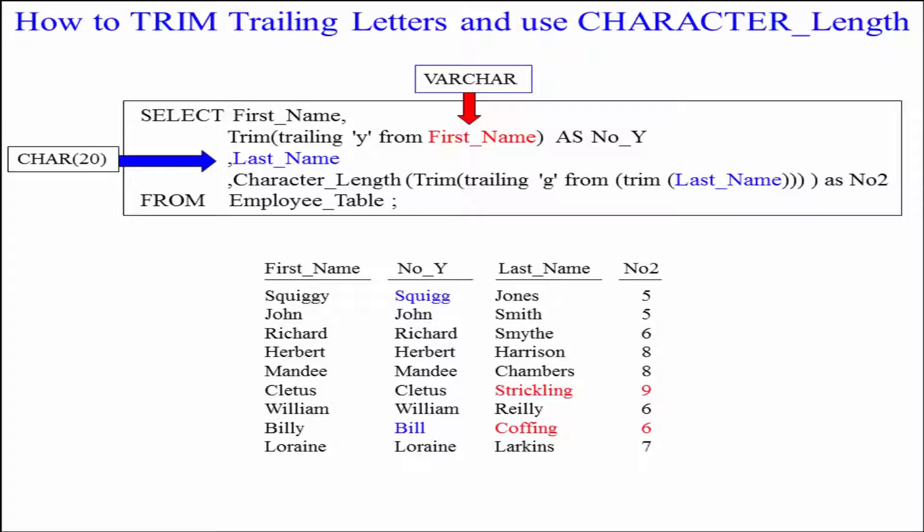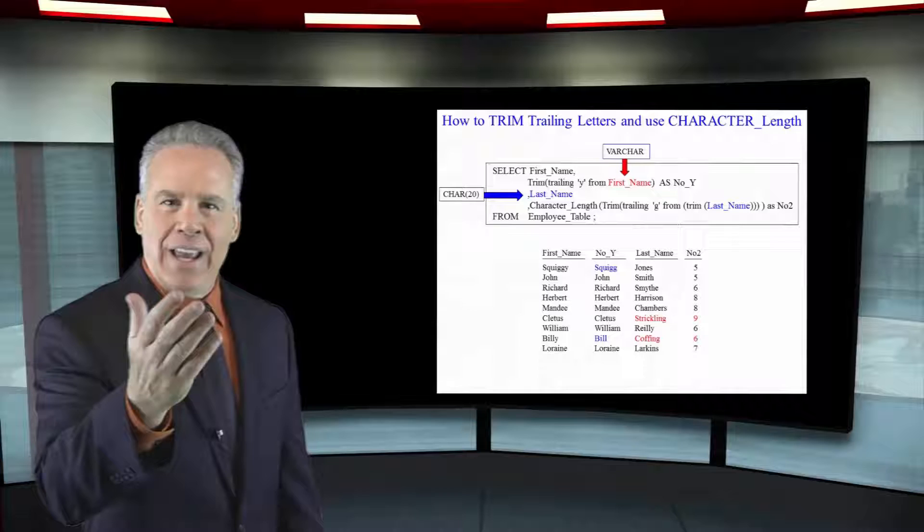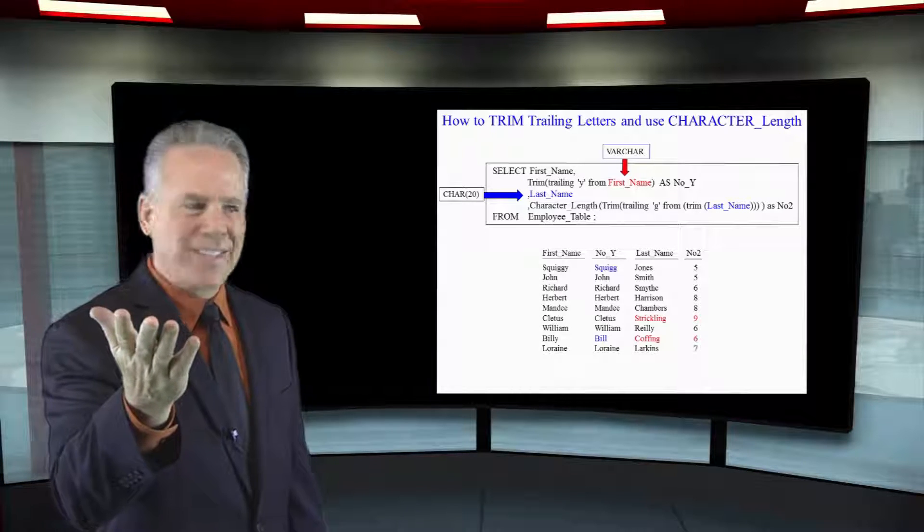Now take a look at the next example. We're going to take the last name — I've got that in blue for you in both places. We get the last name, then we trim the last name of its spaces, and then we trim the trailing G from the last name. From there we pass that over and count the characters of the result.